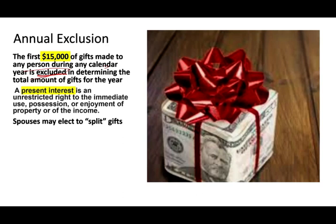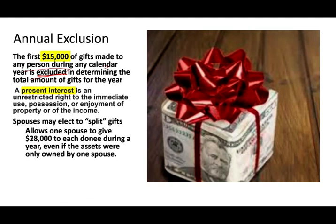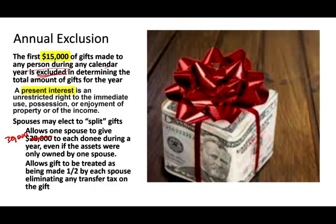Spouses may elect to use something called a split gift. The split gift is going to give you $30,000. Simply put, you could give up to $30,000 to each donee during a year, even if the assets were only owned by one person. So myself and my wife could give, let's assume from my bank account, I can give $30,000 — I can say this is from myself and from my wife, and up to $30,000 is excluded. It allows the gift to be treated as being made half by each spouse, thus eliminating any transfer tax on the gift.